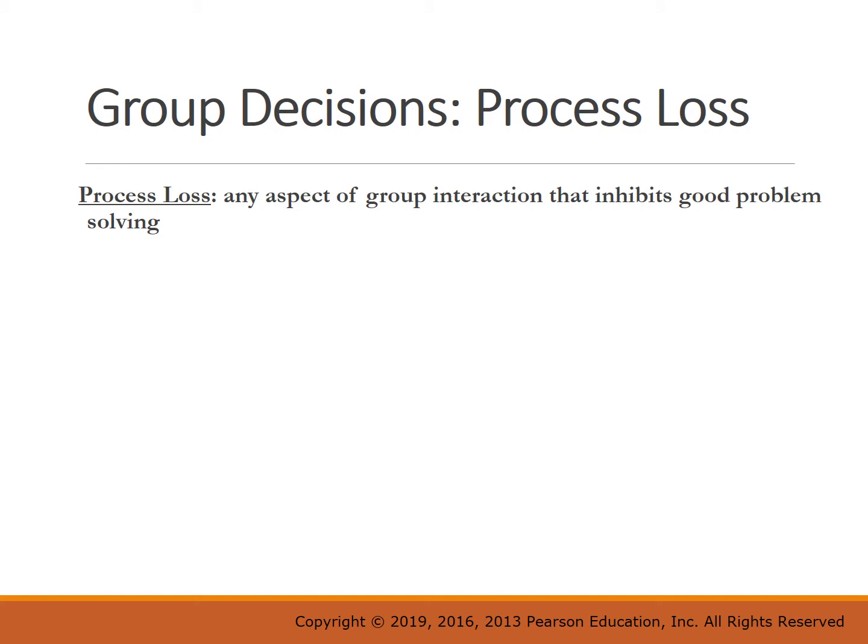Process loss is any aspect of group interaction that inhibits good problem solving. This is a catch-all term for any time your group is dysfunctional and you don't problem solve well together. One reason might be that the group may not be trying to find the most expert member who has the most knowledge about the topic they're trying to problem solve on.